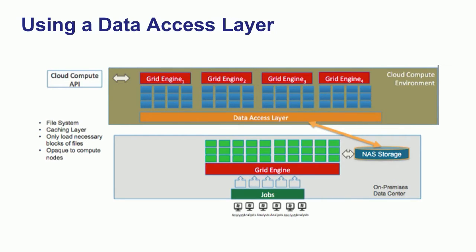One of the things you need to think about in those architectures is a data access layer. To keep it simple, a data access layer in this context is really about caching — locating file system-based caching as close to the compute nodes as you possibly can. The closer to the compute nodes, the less latency you have.